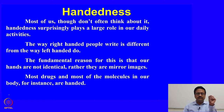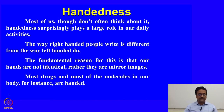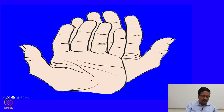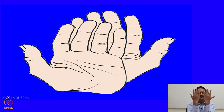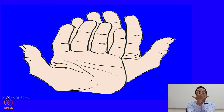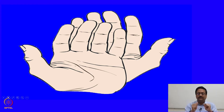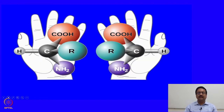Our hands are not identical — rather, they are mirror images of one another. Most drugs and most molecules in our body are handed, meaning they are mirror images of one another. When you try to superimpose one hand on the other you cannot, because they differ in handedness: one is the right hand and the other the left hand, and although fingers may align, the two thumbs point in different directions. This difference is manifested in the four bonds of carbon atoms, giving rise to different geometries around the central carbon atom.